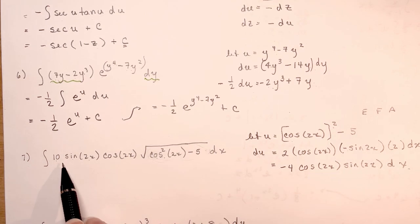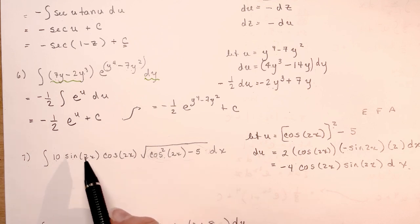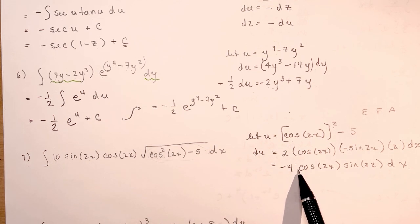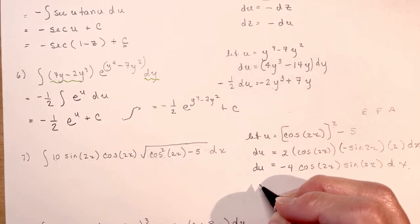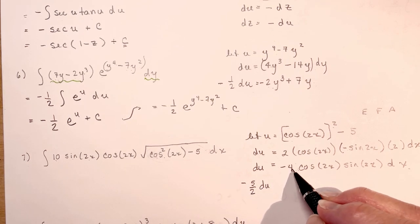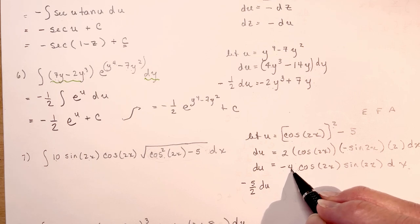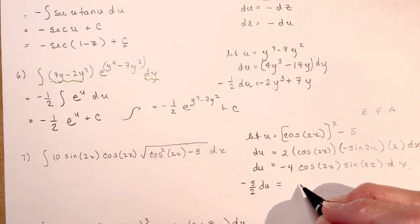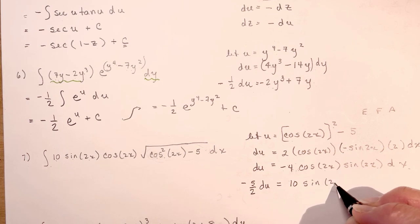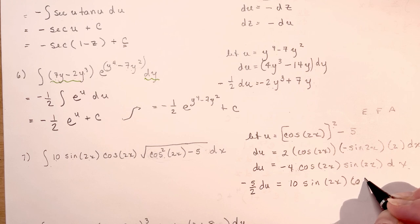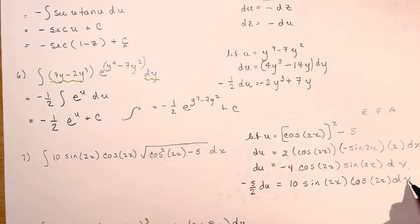Once you've done that you say: look, it's the same thing, except I have a constant problem. I have 10, and this derivative gives minus 4. So to get from minus 4 to 10, I multiply by minus 5/2. So minus 5/2 du is going to give me 10 sine 2x dx. It doesn't matter which order I write these in.